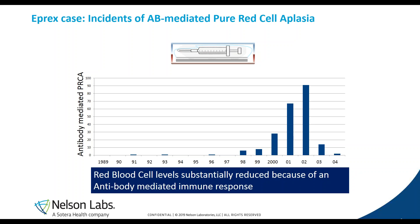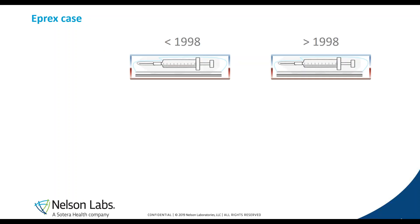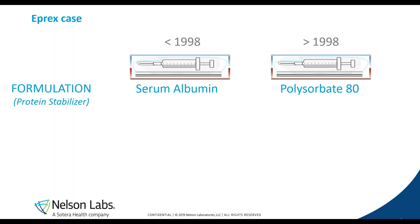This case was heavily investigated. They found out that there was a change in the formulation. Prior to 98, a formulation using serum albumin as protein stabilizer was used. But after 98, this was changed to the use of polysorbate 80 as protein stabilizer, because of the risk of mad cow disease linked with the use of albumin.